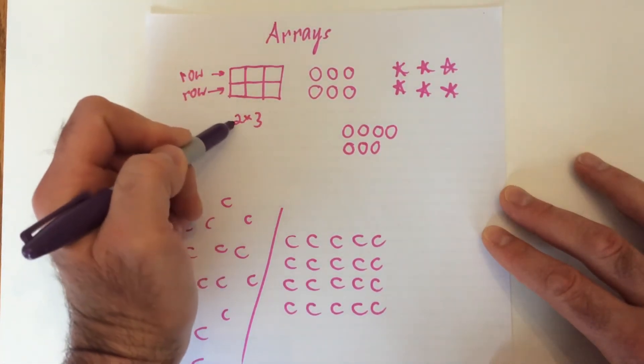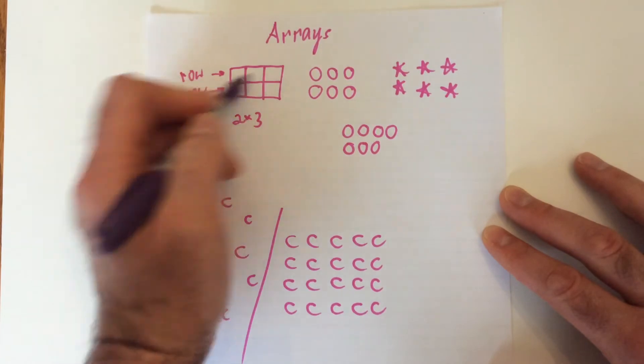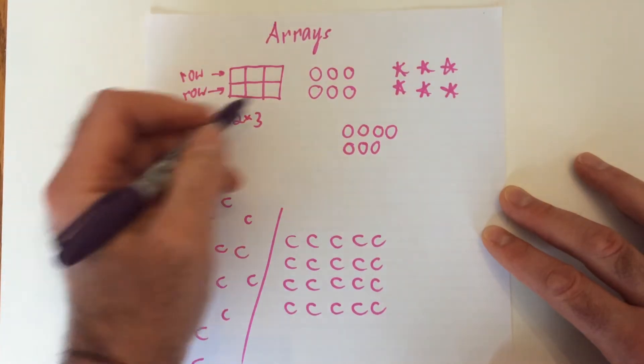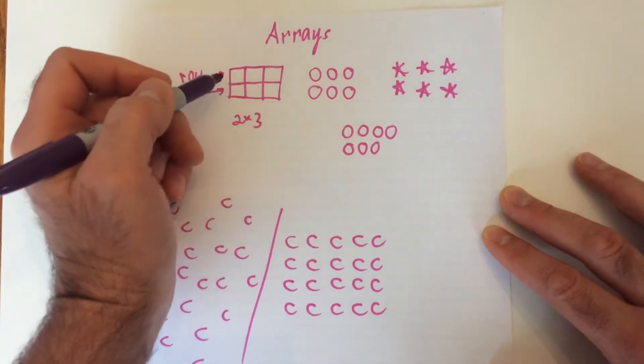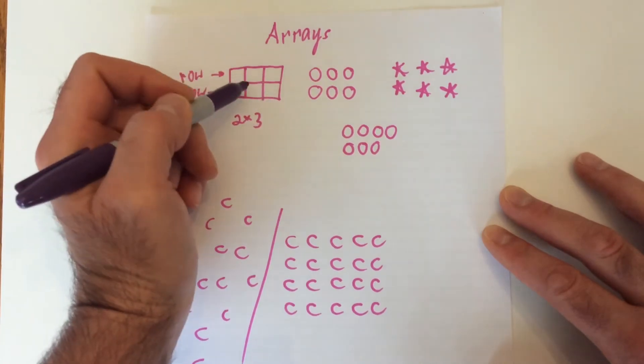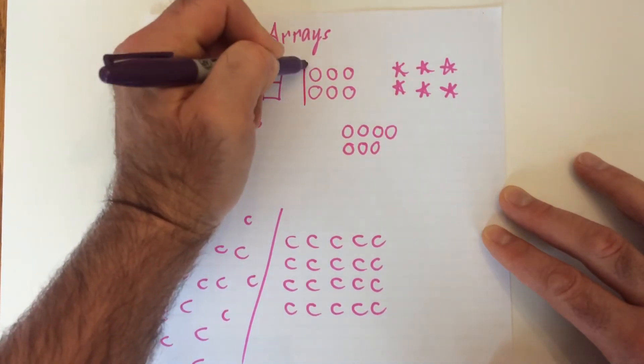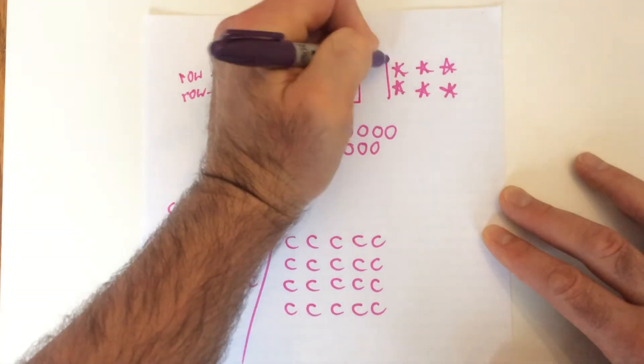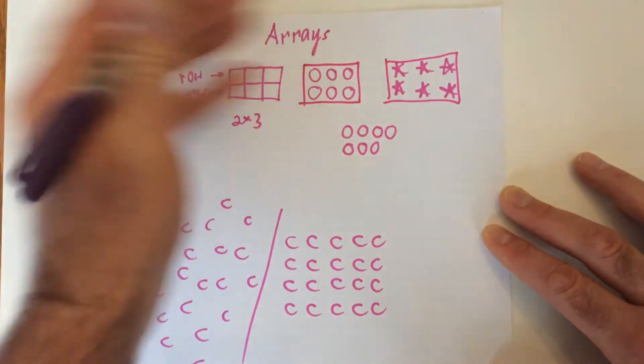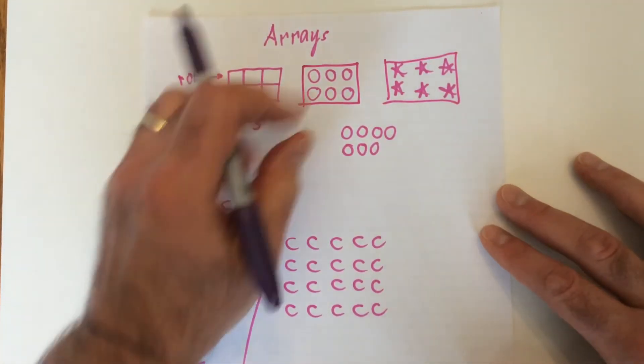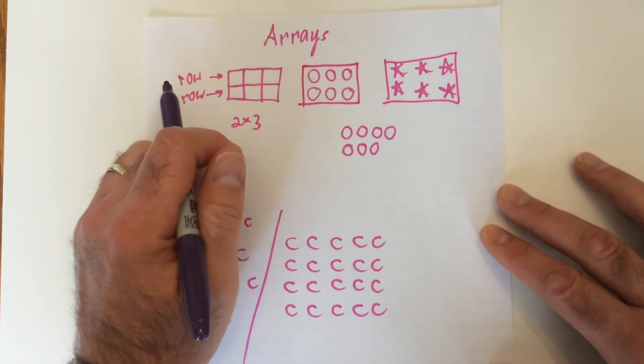So this is how you do it. This says 2 rows of 3, so I've made 2 rows, 3 in each row. And now it should form a rectangle. Now, that doesn't mean you always have to draw rectangles. As long as it has a rectangle shape, so I can draw a rectangle around it, that means it's an array.